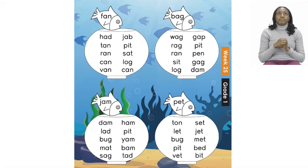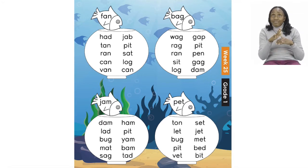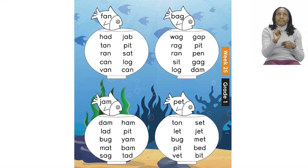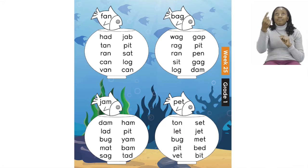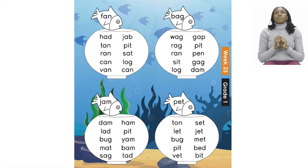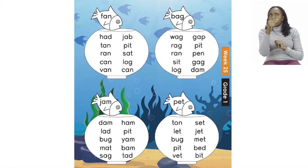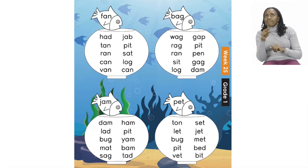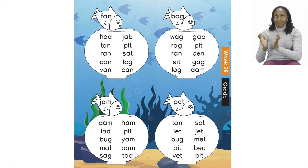Did you manage to circle all your words? Well done! So the words that actually rhyme with fan are: tan, ran, can, and van. Well done. Now I'm going to leave the rest of the fishbowls for you. Take your time boys and girls and read out loud. If you're not sure what the word is supposed to sound like, that's okay — sound it out first and then blend the letters together. If it's still too hard, you can always ask an adult to help you. I'll see you when you're done.